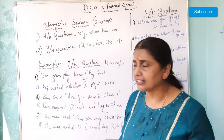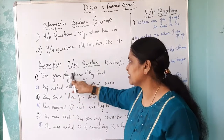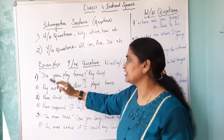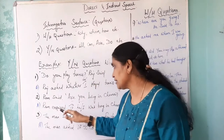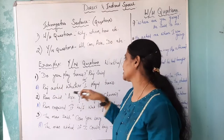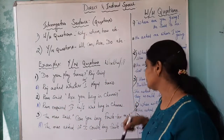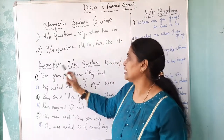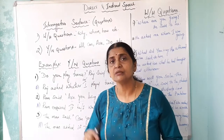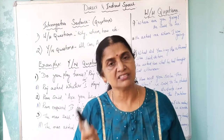So, what are the changes you make when dealing with Yes/No questions from direct to indirect speech? You have to change the verb and put 'whether' or 'if' — that is very important. For example: 'Raj asked whether he played tennis.' 'Ram inquired if he was living in Chennai.' 'The man asked if I could buy fruits for him.' Don't forget to change the tense. The same tense rules apply as you have seen for assertive sentences.